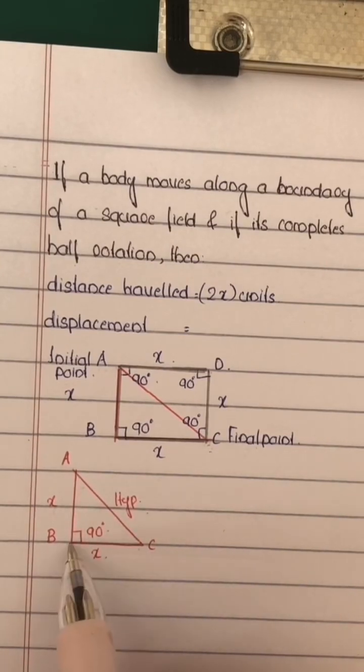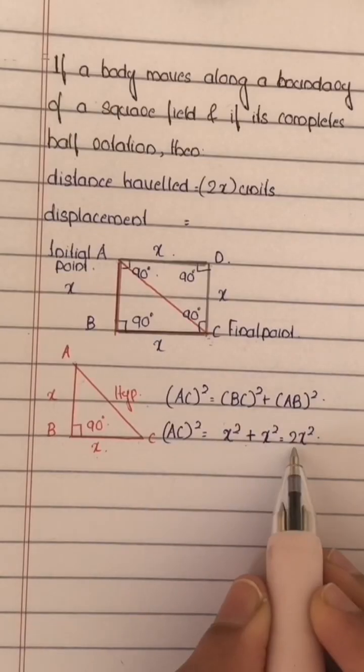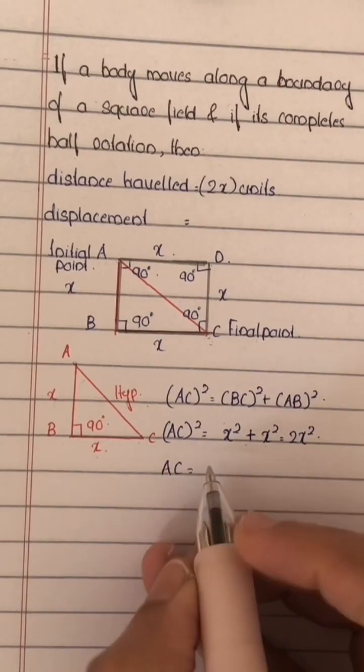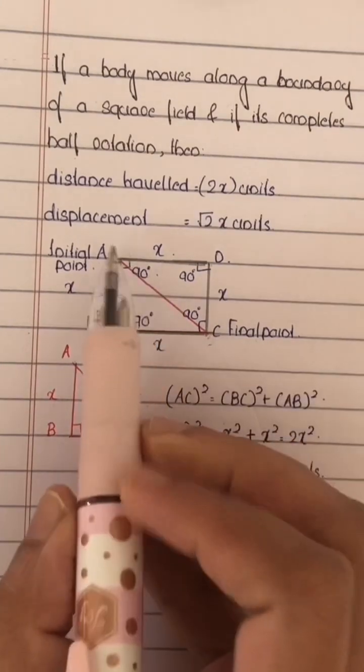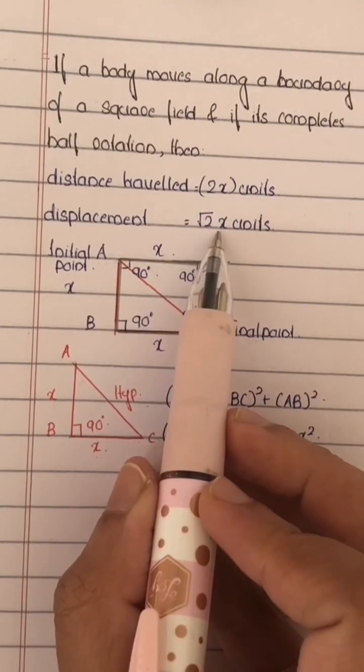AC square is 2x square. AC equal to square root of 2x square, that is root 2x units. That is, displacement will be root 2 into x, where x is the side length.